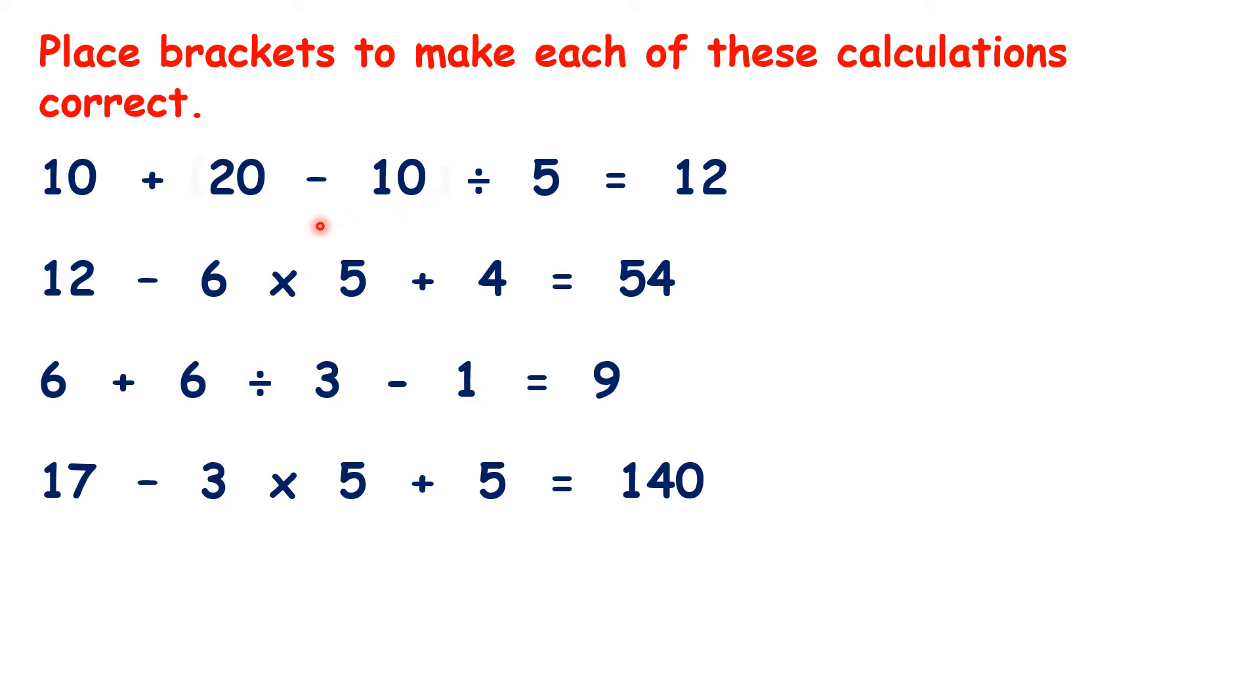We need brackets around 20 minus 10, because remember, after the brackets, we always divide or multiply before we add or subtract. So, doing the brackets first, 20 minus 10 is 10. Then, we need to do the division before the addition, and 10 divided by 5 is 2. Then finally, we can add 2 to 10 to get 12.